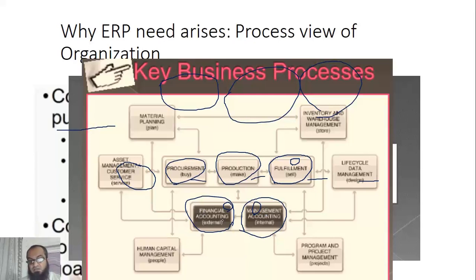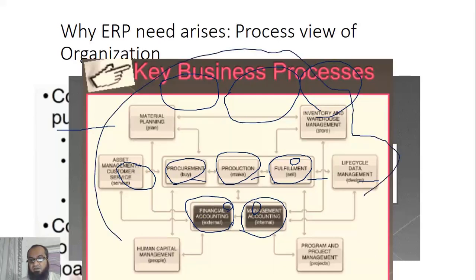Financial accounting and management accounting are also processes that cut across different departments. Financial accounting is not only done in the finance or accounting department. In an ERP, whenever purchase people do something, accounting entries are automatically associated with it. Whenever sales people perform transactions with debit and credit implications, the accounting entries are automatically made. This is the concept of an ERP — an integrated system for the entire organization, with different applications for different business processes, where everything is integrated and centralized.